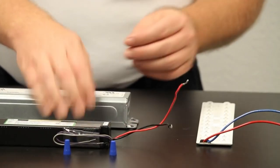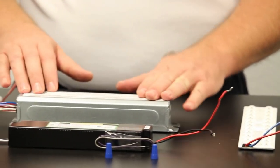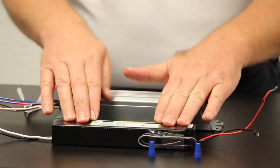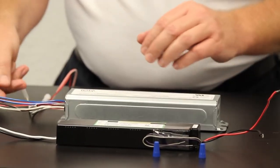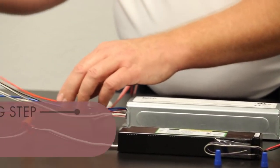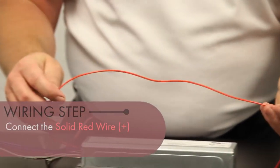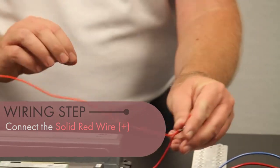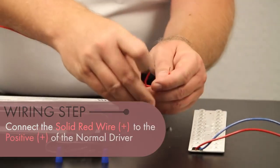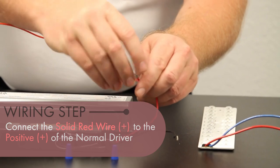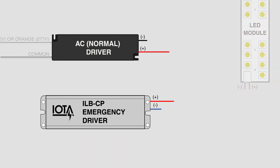Next, I'm going to connect the ILBCP to the normal driver. First, we start with the solid red wire, which is a positive connection, to the positive connection of the normal driver. In this case, on this driver, the positive connection is a red wire.